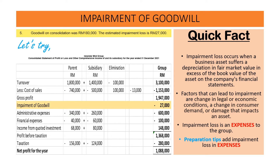For the fifth additional information, goodwill on consolidation was $180,000 and the estimated impairment loss is $27,000. Thus, this $27,000 will be treated as an expense.